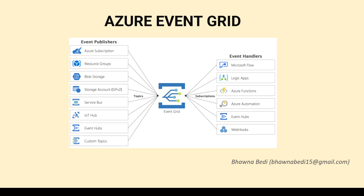It is a pretty simple service. Publishers are resources within Azure which are the source of events — those are your publishers, the starting point when you talk about Azure Event Grid. For example, Azure Blob Storage: whenever you write a file into Azure Blob Storage, that is an event. That is your starting point and that is called an event publisher. You publish that event to Event Grid, saying that a file has come into your Azure Blob Storage — take this as an event.